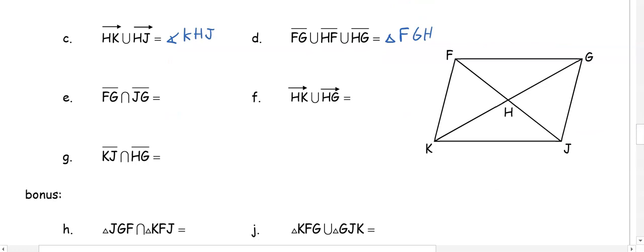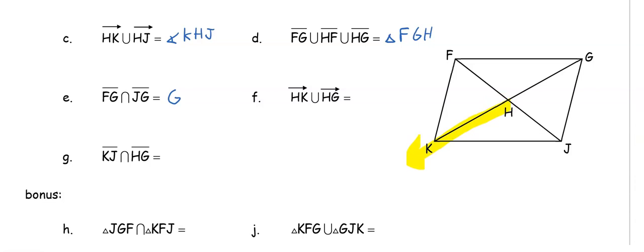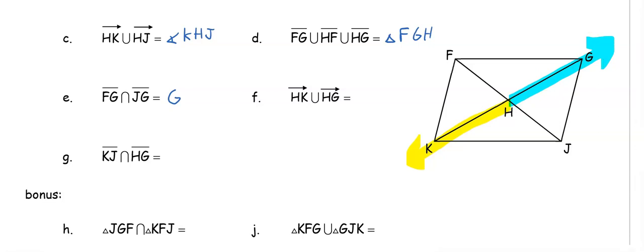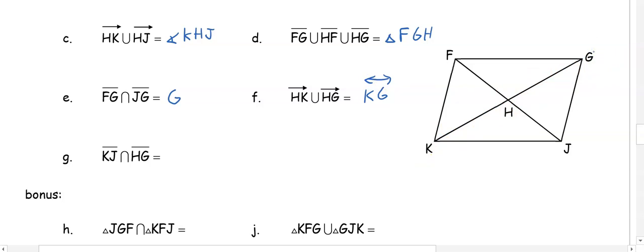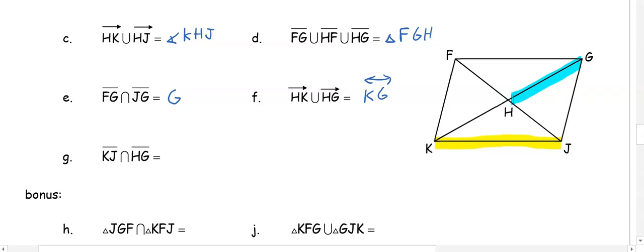In part E, we're back to an intersection. Segment FG and segment JG are going to intersect at point G. In part F, ray HK union ray HG — now we have arrows going in both directions, so they form a line, which we rename as line KG. In part G, segment KJ intersecting with segment HG — those two segments never touch each other, so there is no intersection.